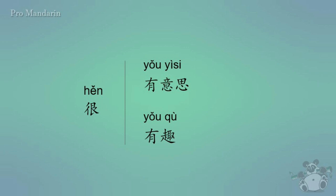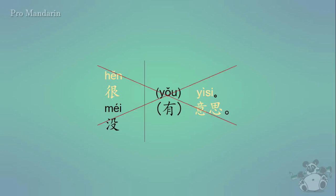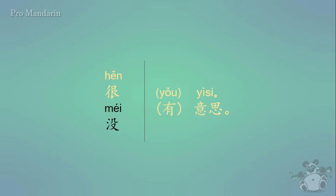Now, the way to negate this — to say 'it's not very interesting', meaning it's boring — you would say méi yǒu yìsi. You may have also noticed that I put yǒu in parentheses, because for méi, you don't actually have to say yǒu. You could say méi yìsi, and that means the same thing as méi yǒu yìsi. However, for hěn, you always have to say yǒu. So just to be clear, you wouldn't say hěn yìsi — you would say hěn yǒu yìsi.